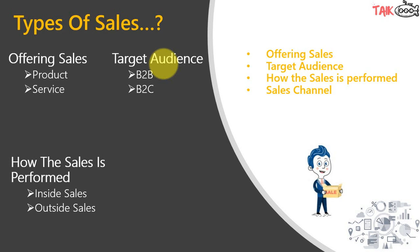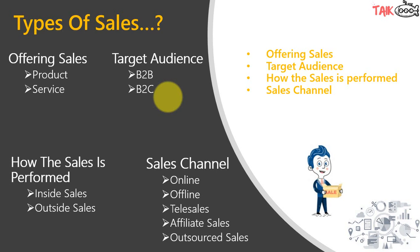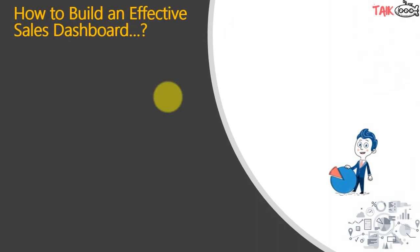The fourth type is the channel used for the sale: online, where customers receive an email about products and services; offline, where a physical person visits and sells the product; tele-sales, where a call comes from customer care; affiliate marketing, where someone promotes another's product through websites like Amazon; and outsource channel, where a company gives the job to another company to sell the product on their behalf.